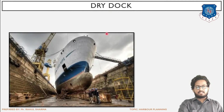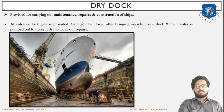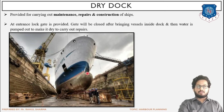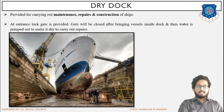Next is dry dock, which is again a very important term and we will be learning in detail along with its types in chapter number 5, that is docks and locks. The basic purpose of dry dock is to carry out the repair and maintenance work of a ship. Whenever we want to carry out repair or maintenance work we need to have that space in a dry stage, that is we need to exclude or remove the existing water.